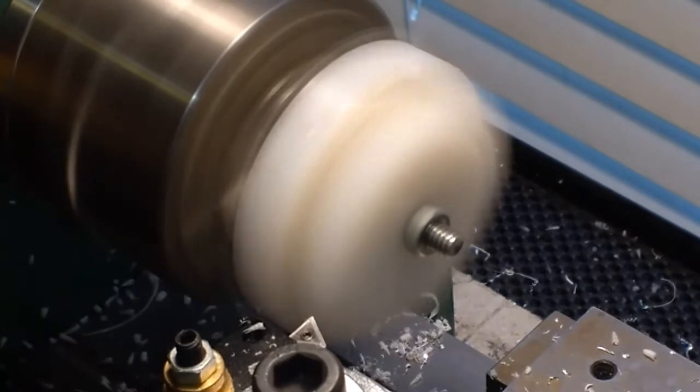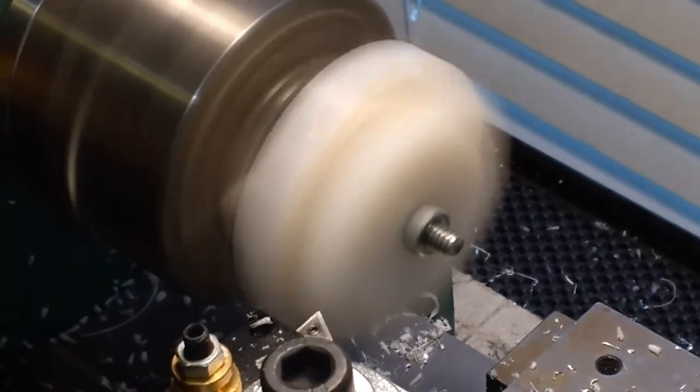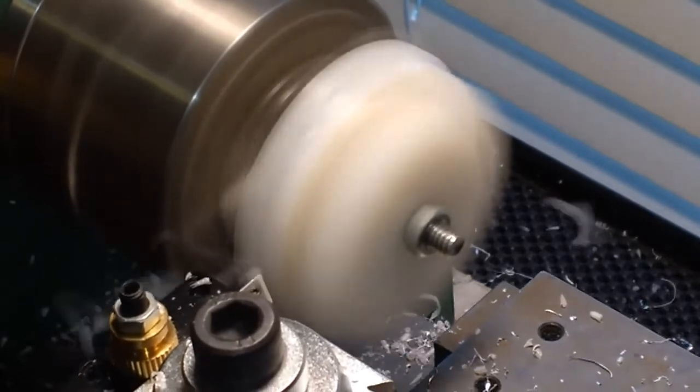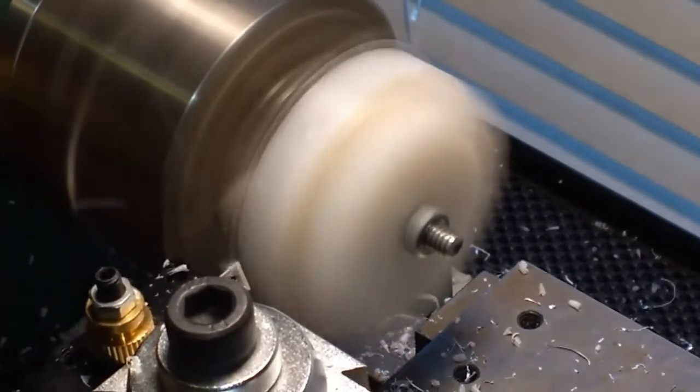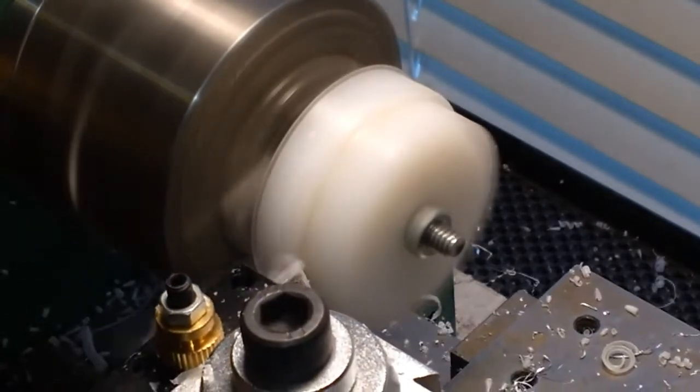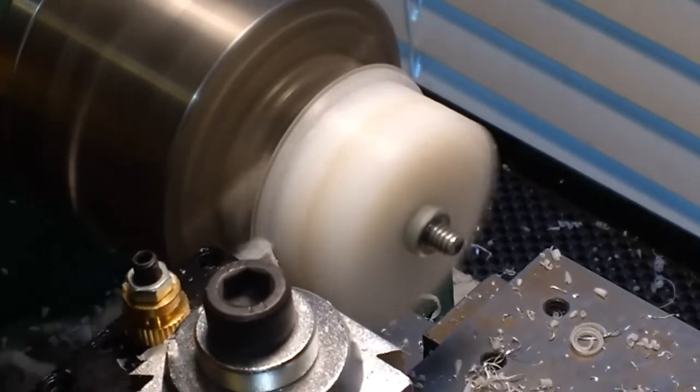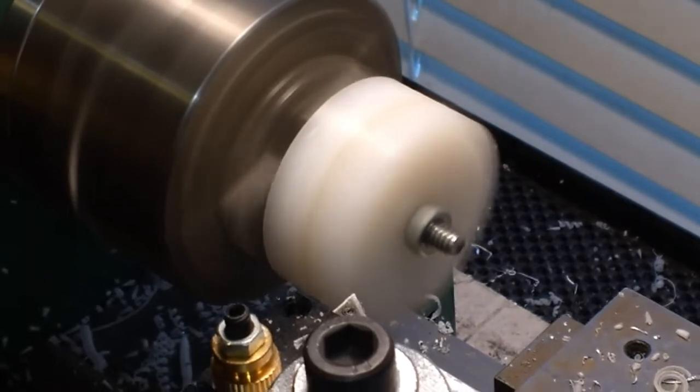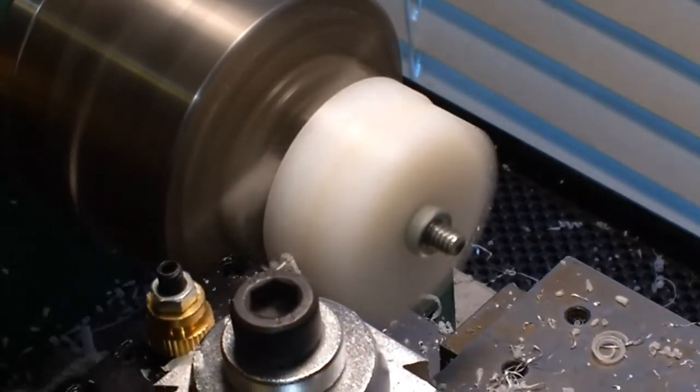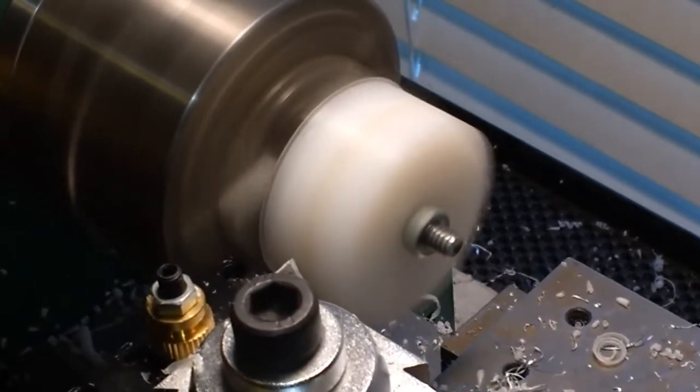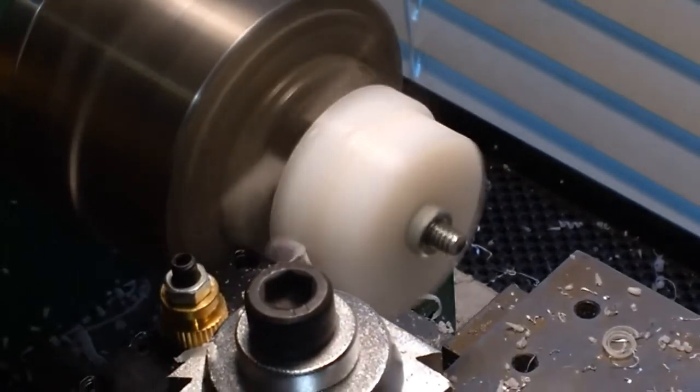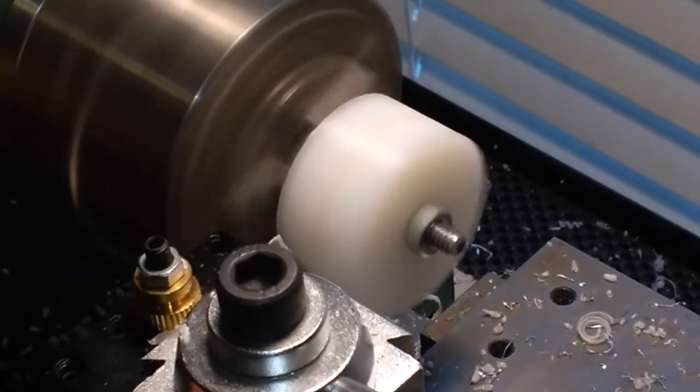As you can see here, the HDPE material really machines easily. It's a little messy, it gets stuff everywhere but it just cuts so easy and you can cut fairly deep cuts. My metal lathe is a pretty inexpensive one, it's a 7x10 and it's an older one but it'll really cut this material very easily.